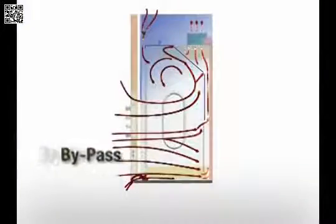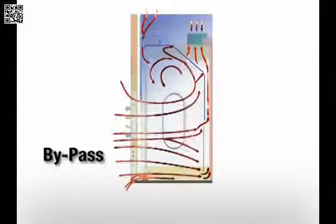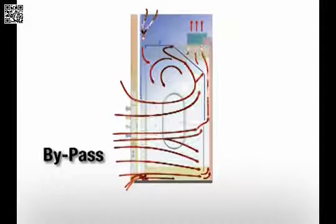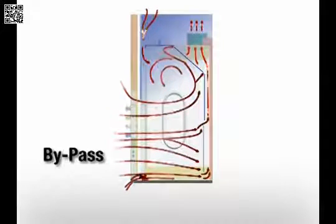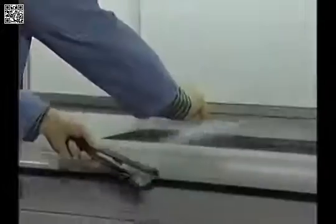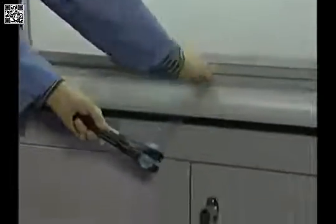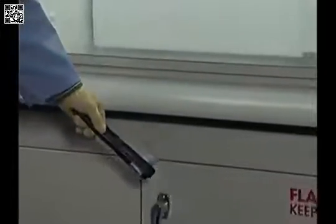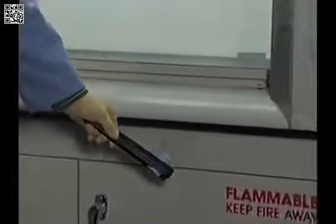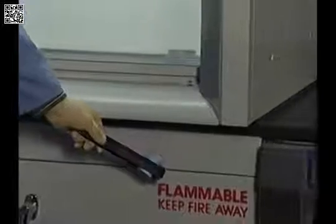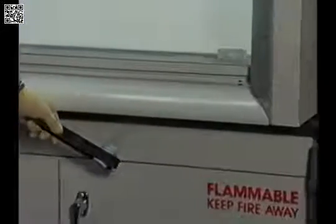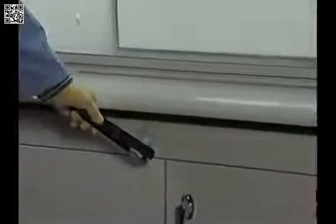The bypass hood is designed to minimize the fluctuations in face velocity as the sash is lowered or raised. Air enters the hood through openings along the top of the hood and underneath the airfoil, even when the sash is in the fully closed position.